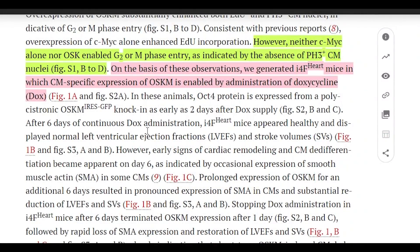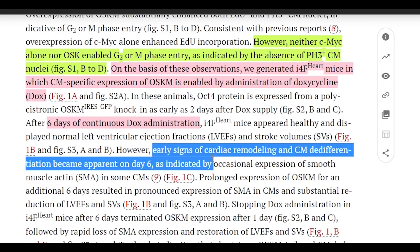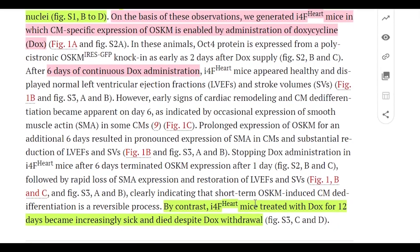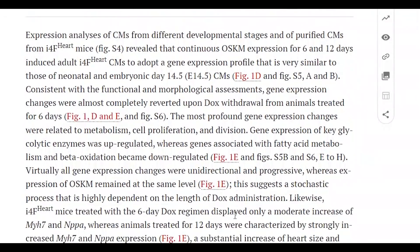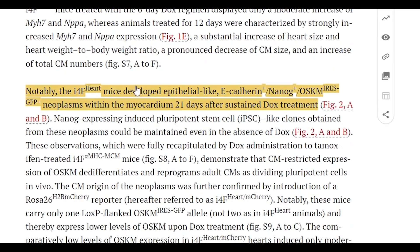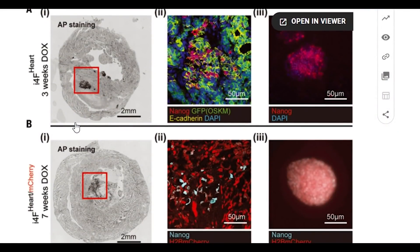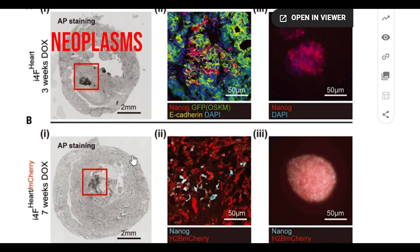So firstly, they just did this in normal mice. And six days with doxycycline showed signs of de-differentiation, such as the presence of smooth muscle actin, suggesting that the expression of these factors were having an impact. However, prolonged exposure showed more complete reprogramming, showing neoplasms - cancerous growths - after 21 days of expression. And these growths could even be maintained, even if the mice stopped receiving doxycycline.